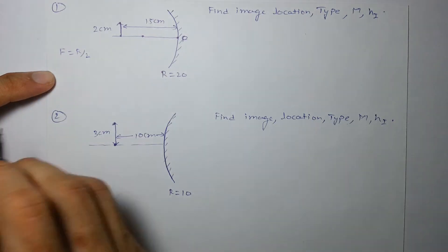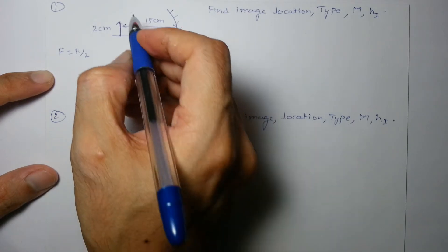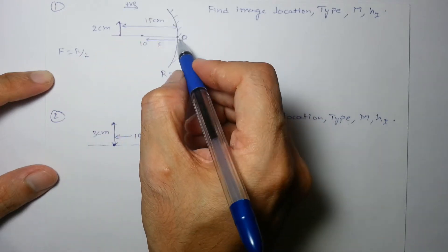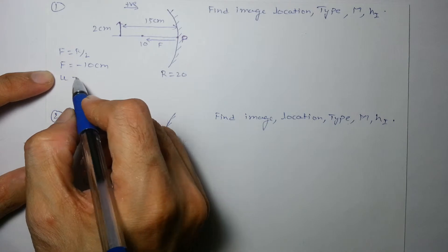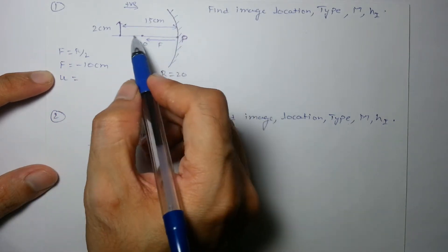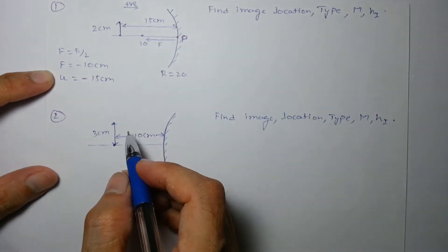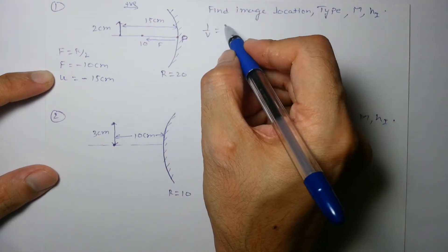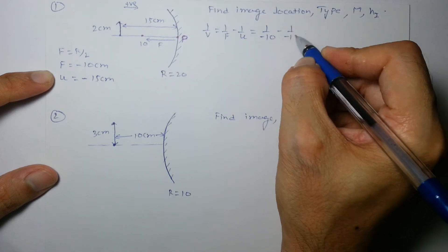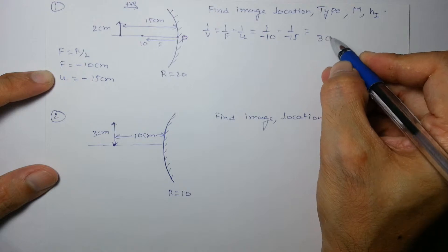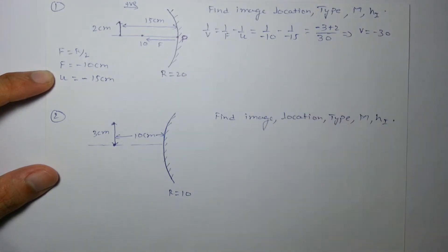f = R/2, so focal length is 10 cm. Since this is a concave mirror, the focus is in front, so focal length with sign is −10 cm. Object is also in front of the mirror, measured opposite to direction of incident ray, so u = −15 cm. Using mirror formula: 1/v = 1/f − 1/u = 1/(−10) − 1/(−15) = −3/30 + 2/30, giving v = −30 cm.